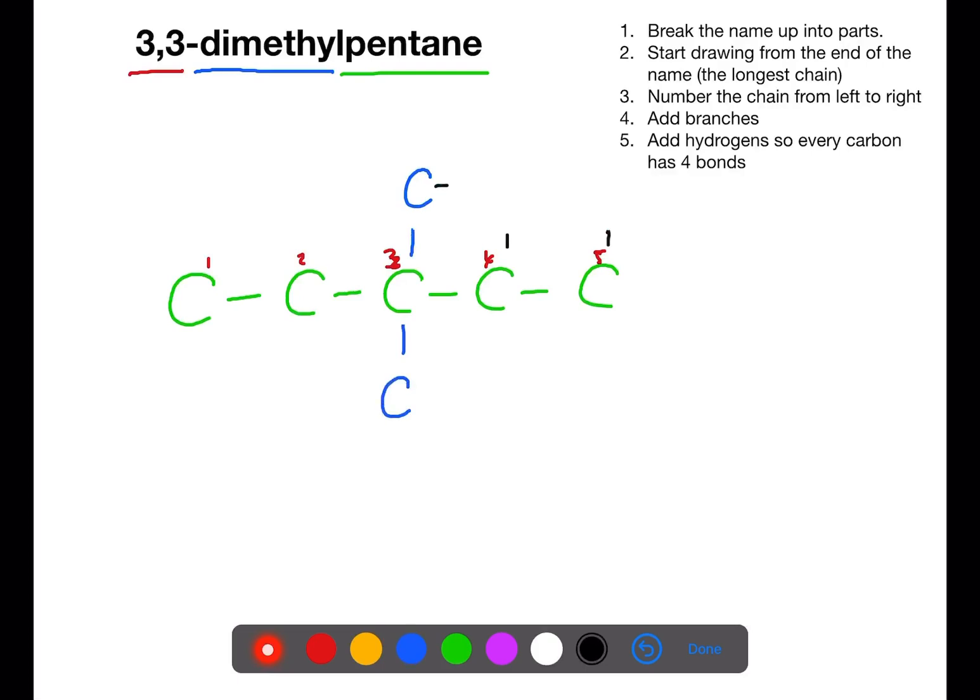We're then going to go around the full structure and add in bonds so that every carbon has four bonds. To each of these bonds we will add hydrogen.